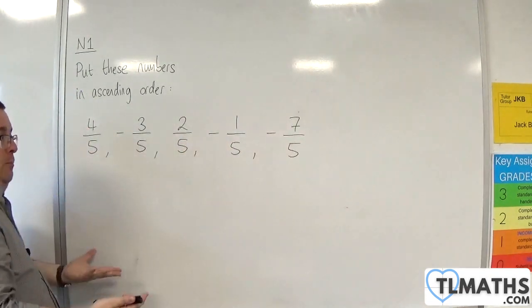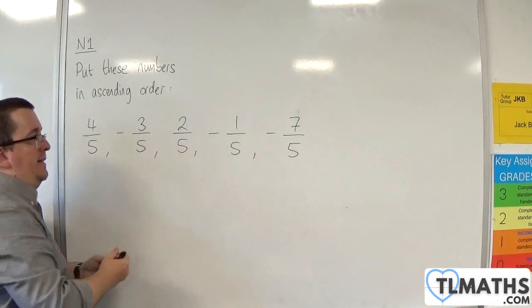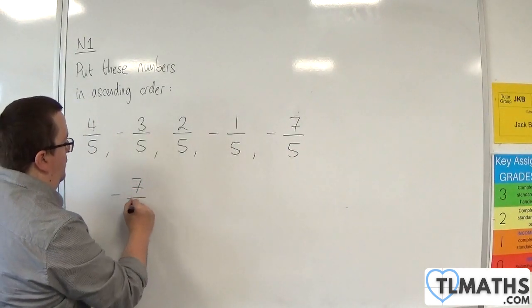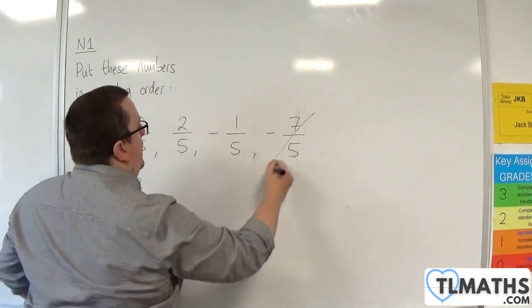So the smallest is the most negative, which is the -7. So the first one is -7/5. That is the smallest.